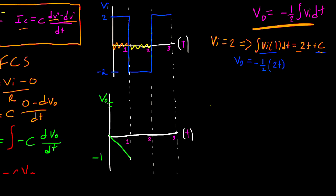Now let's continue to our next interval between 1 and 2. VI of T for this interval between 1 and 2 is going to be equal to negative 2. So that means that the integral of VI of T is going to be equal to negative 2T plus C.